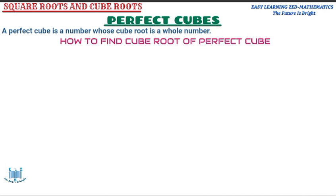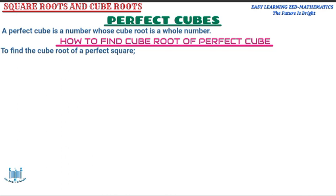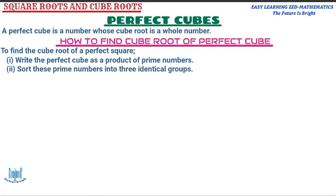Now let's look at the steps you follow when you want to find the cube root of a perfect cube. Step one: write the perfect cube as a product of prime numbers. Step two: sort the prime numbers you have found into three identical groups.